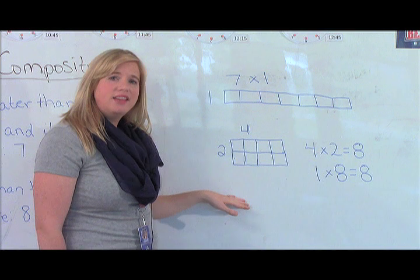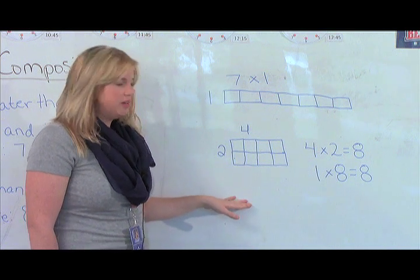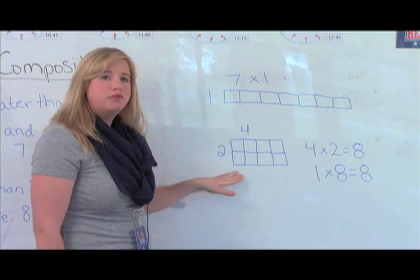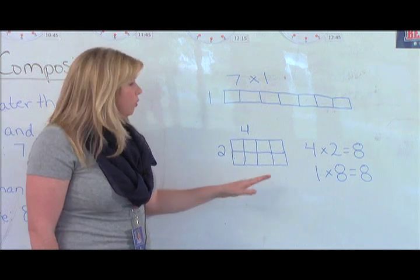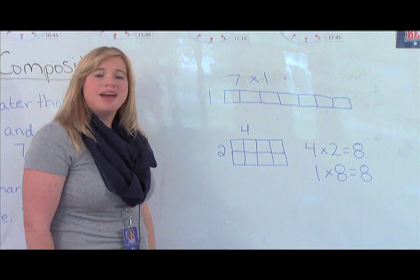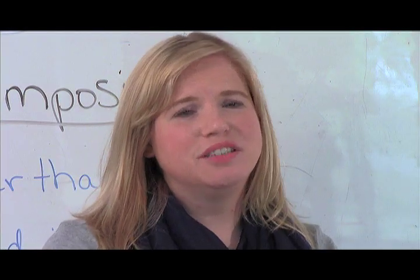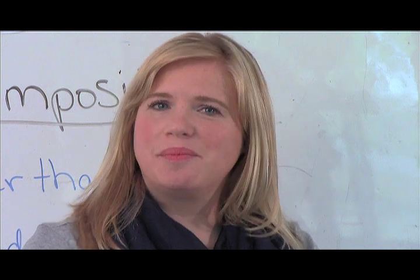If we look at the number eight, there are actually two different ways we could do it. We could do two times four and make that array, or we could do eight times one. So that makes it a composite number. And that is the difference between prime and composite numbers.